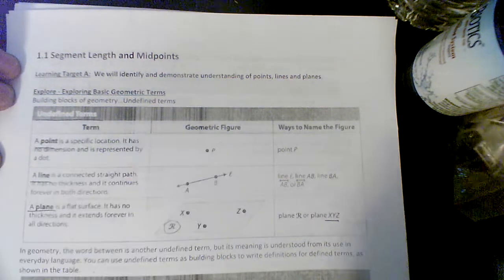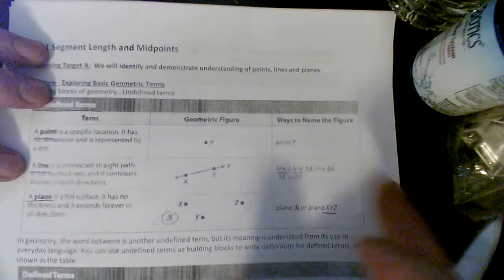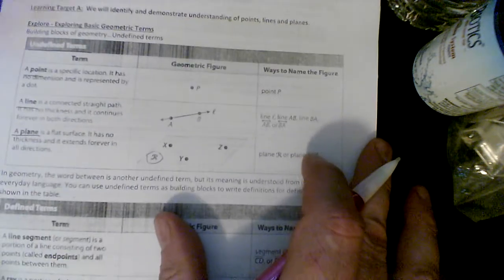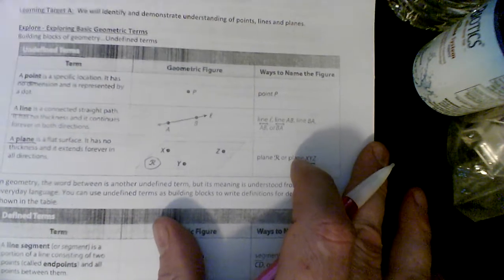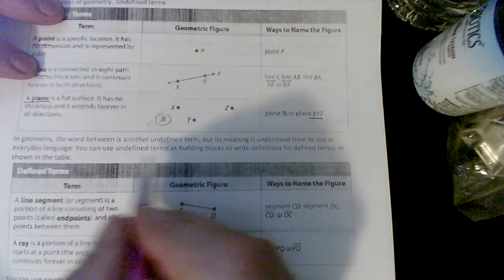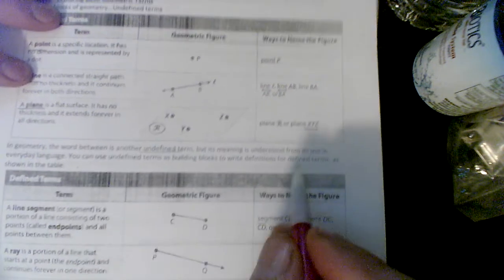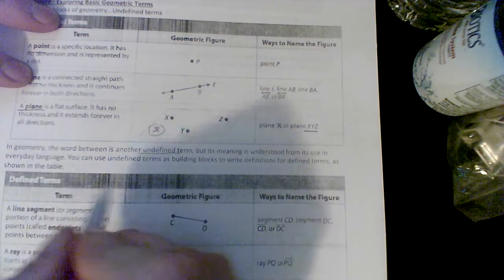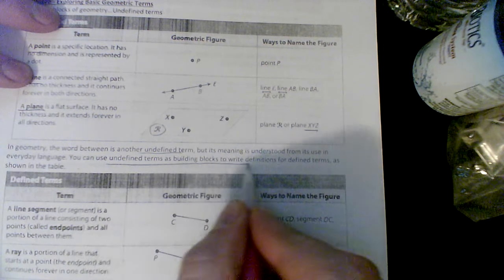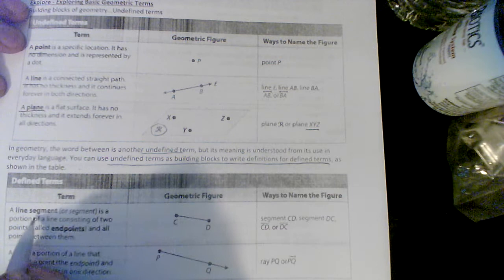A point, a line, and a plane are all what's called undefined terms. You should read through this, maybe even pause and spend some time—these are all going to be on your quiz and test. In geometry, the word 'between' is another undefined term, but its meaning is understood from its use in everyday language. You can use undefined terms as building blocks to write definitions for defined terms.